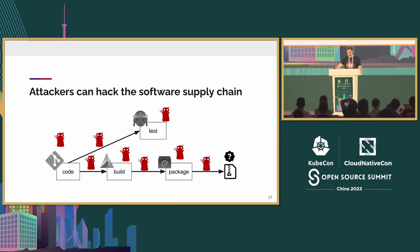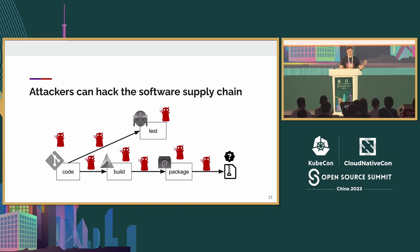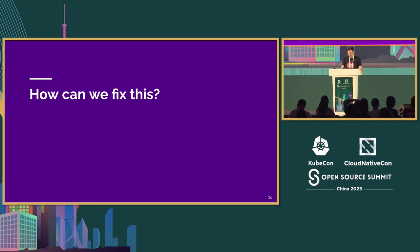Even worse, hackers can compromise all kinds of places between steps. Between your code and your build process, a hacker could interfere so that rather than building what came out of version control, you build something different entirely. Rather than packaging what the build system produced, you package something else. So the question is: how do we fix this?